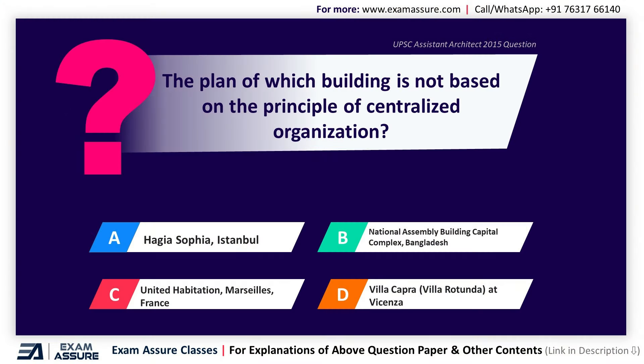Next question. The plan of which building is not based on the principle of centralized organization? Option A: Hagia Sophia, Istanbul, Option B: National Assembly Building Capital Complex, Bangladesh, Option C: Unité d'Habitation, Marseilles, France, Option D: Villa Capra at Vicenza. The correct answer is Option C, Unité d'Habitation, Marseilles, France.